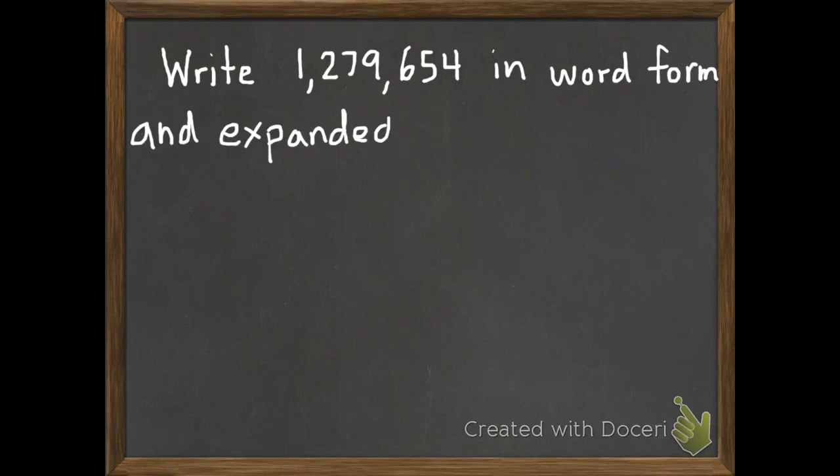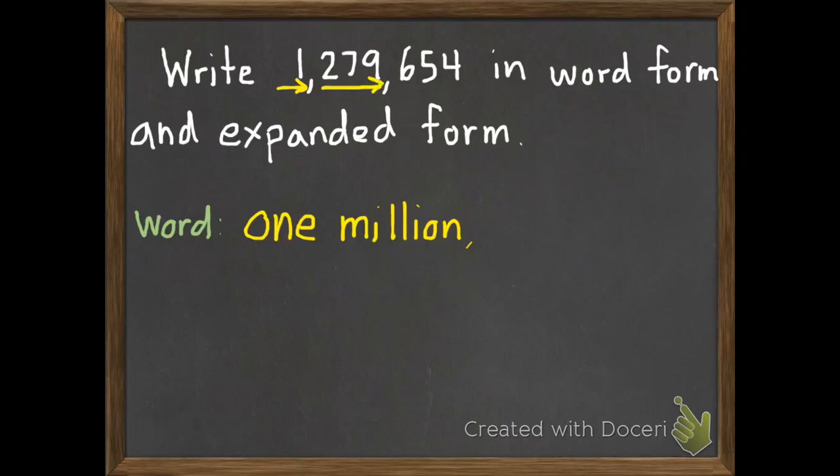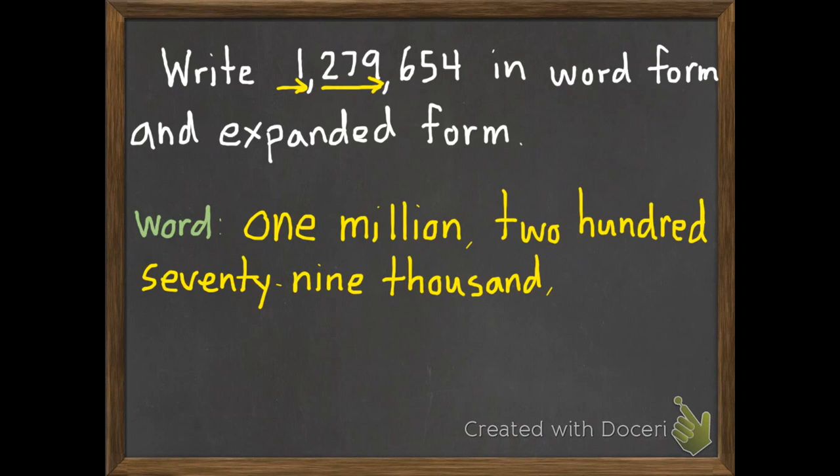Now we're ready for some examples. I'll do two for you, and I'll have you do some. The first one says, write 1,279,654 in word form and expanded form. Always watch for those 'ands.' It means I need to do two things. Let's start with word form. I'm going to write this in words the same way I would read it. I have 1, then I hit a comma, which is the million. So, 1,000,279. That's the thousand. So, 279,654. That's the word form.